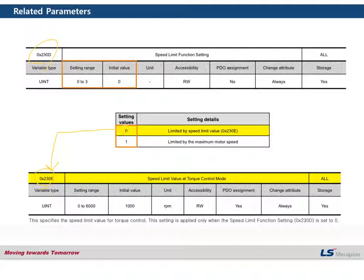The second way is to limit speed by the maximum motor speed. If you set the value of 1 for parameter 230D, in this case you don't have to set any certain value for the speed limit, because this is determined by the motor specification. By setting the motor ID, the maximum motor speed is determined based on the user's motor.